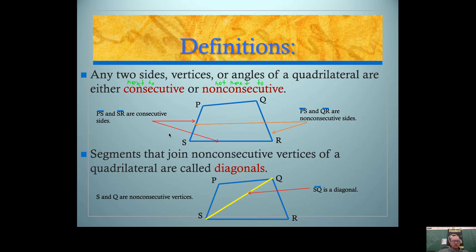So here's some examples. Segment PS and segment SR are consecutive sides. I know that because I can look at the picture. I also know that because if I just look at the name of the segments, notice how they both have an S. Consecutive sides share a vertex. The non-consecutive sides obviously don't share a vertex. So segment PS and segment QR are non-consecutive. These are actually considered opposite sides. But they don't share a vertex.